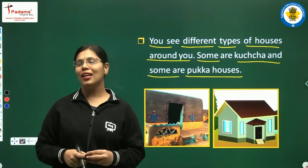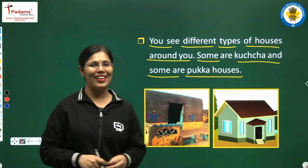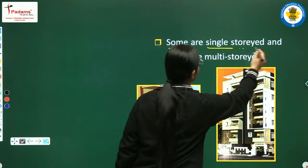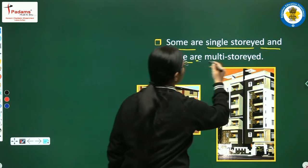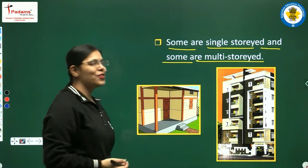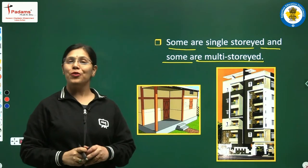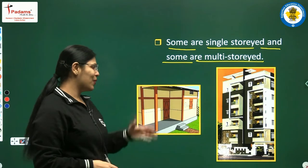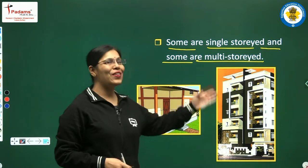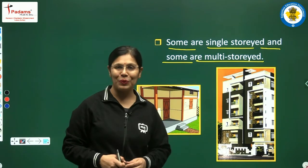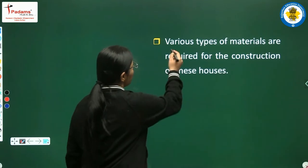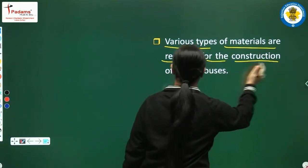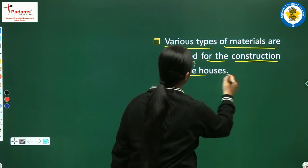Some houses are paka houses. Various types of materials are required for the construction of these houses. Bilkul, kisi bhi ghar ko banane ke liye bahut saare alag-alag prakar ke saman chahiye hote hain.